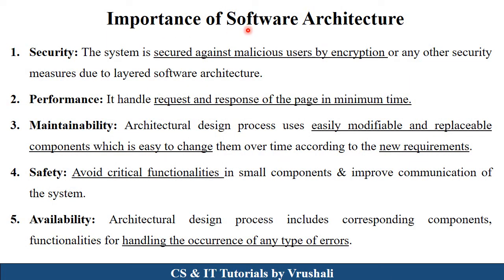The next thing is the importance of software architecture. Software architecture is generated to provide security towards your product — mentioning different login credentials and authentication like OTP to secure it against malicious users and viruses. It also handles performance, managing request and response in minimum time; the best example is Google's search engine, which shows results within a second. Software architecture is easy to modify with replaceable components as customer requirements change, provides safety features as per customer requirements, and can handle different types of errors and the complete flow of the system.